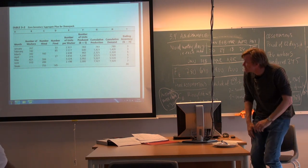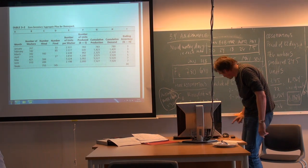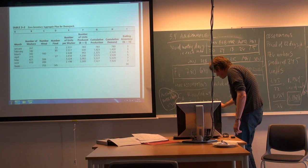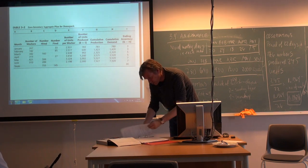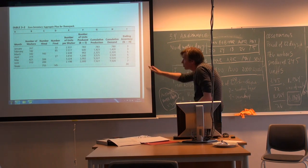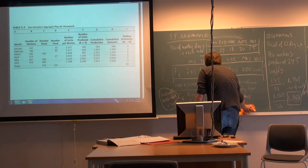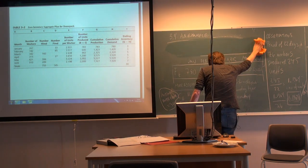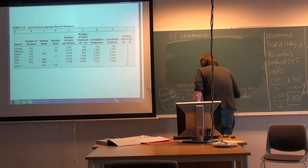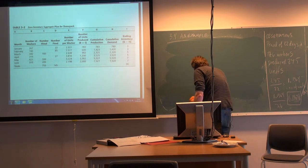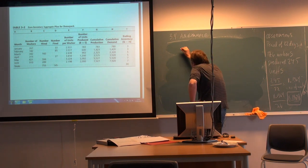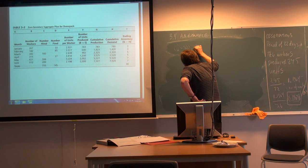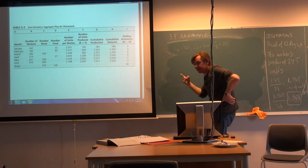Now we evaluate the minimal inventory plan. Based on costs — hiring cost 500, firing cost 1000, inventory cost 80 — we calculate the total cost. Hiring costs: 755 hirings at 500 each equals 377,500. Firing costs: 145 firings at 1000 each equals 145,000.